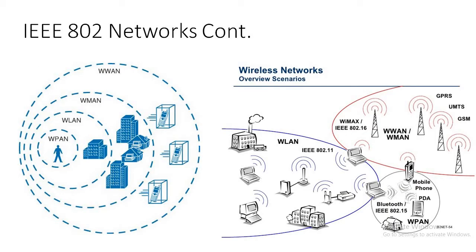Here is a quick overview of all the networks we have studied and the standards they use. The wireless personal area network uses the IEEE 802.15 standard, also known as Bluetooth, and its range is around an individual person. The wireless local area network uses the IEEE 802.11 standard, also known as Wi-Fi, and its geographical range is up to a building or campus.